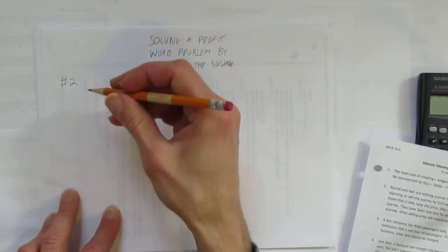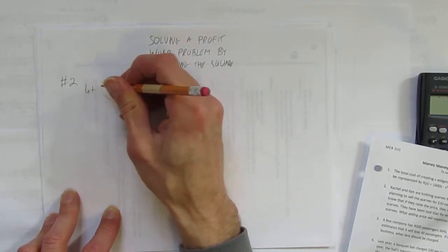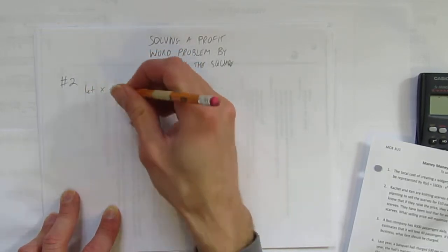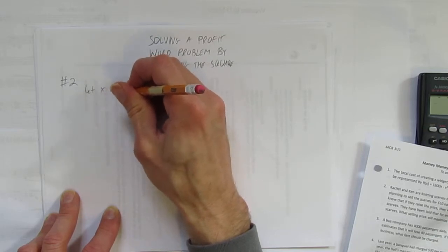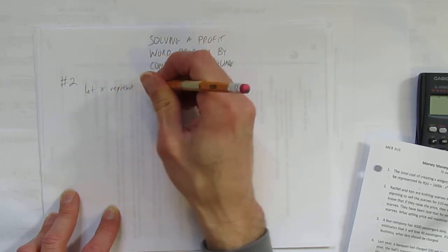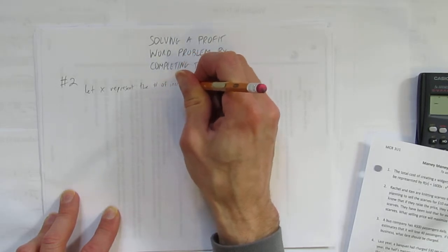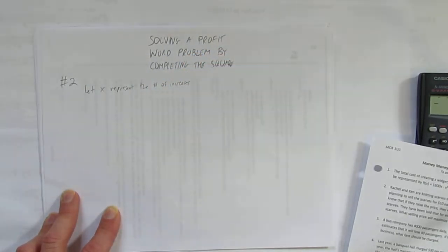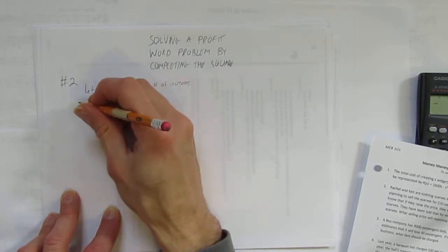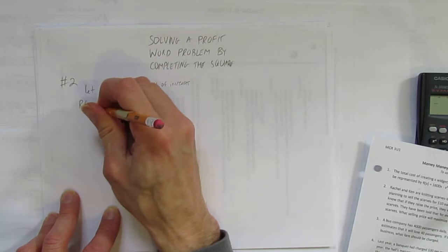Let's get started. The first thing we're going to do is create a variable x. And x will represent, let x represent the number of increases. That's our first thing. Now it's a profit question, which means we need revenue and costs. Let's start with the revenue equation.